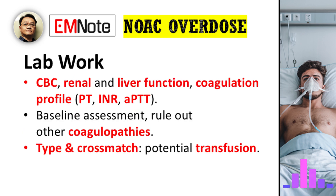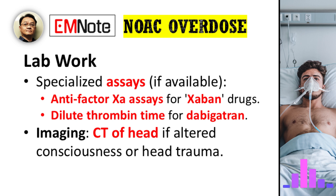And what about the lab work? Given the limitations you've mentioned, what laboratory tests are most helpful and what information can they provide? For any suspected overdose, we should immediately send a complete blood count, a full renal and liver function panel, and a standard coagulation profile, including PT, INR, and APTT. While these routine coagulation tests may be insensitive to the degree of anticoagulation, they are crucial for baseline assessment and for ruling out other causes of bleeding or underlying coagulopathies. If a major bleed is suspected, a type and cross-match is also essential for potential transfusion. If available, specialized assays like anti-factor Xa assays for the Xa inhibitor drugs, or a dilute thrombin time for dabigatran, can provide a clearer picture of the drug's activity, but these are not always readily accessible.